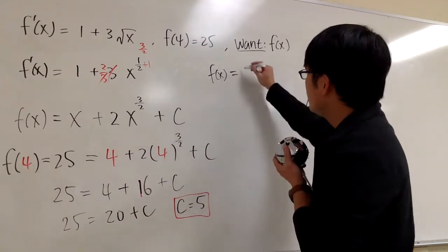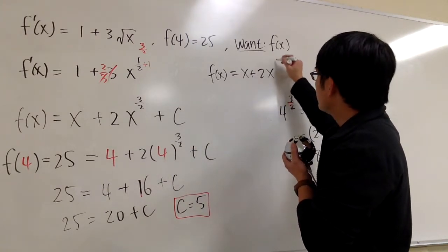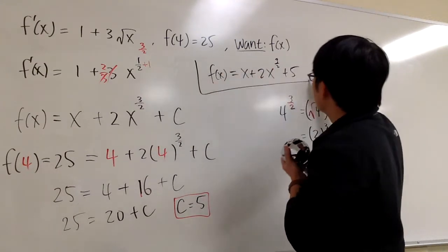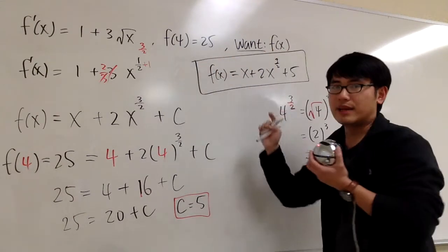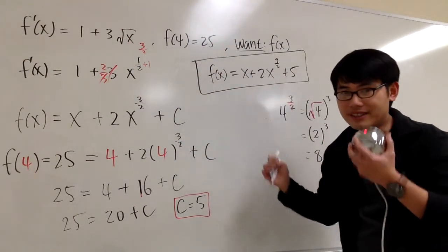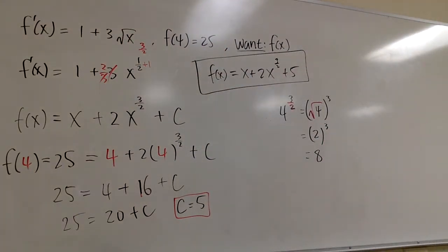So I'm done. x plus 2 times x to the 3/2 power, and then plus 5. This right here is the original function, and that will satisfy the derivative and also that condition. That's it.